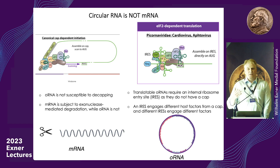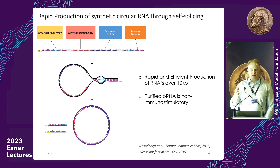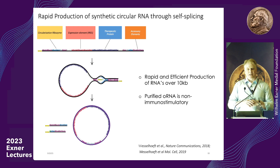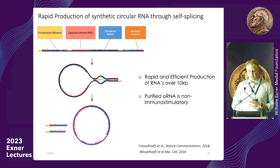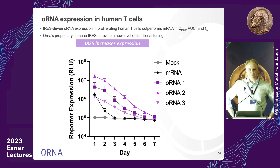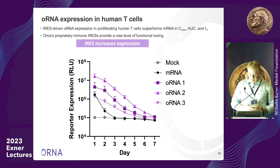We developed the first easy method for creating circles out of lines. There's a process whereby you incorporate a ribozyme that allows for self-splicing — an RNA that automatically turns itself into a circle under the right conditions. We published papers about this process, how to purify them, and how to use them to deliver protein in mammalian cells. We went on to start a company called Orna, and at Orna we've shown that these circles are very potent ways to deliver proteins to T cells — the immune cells in our bodies.